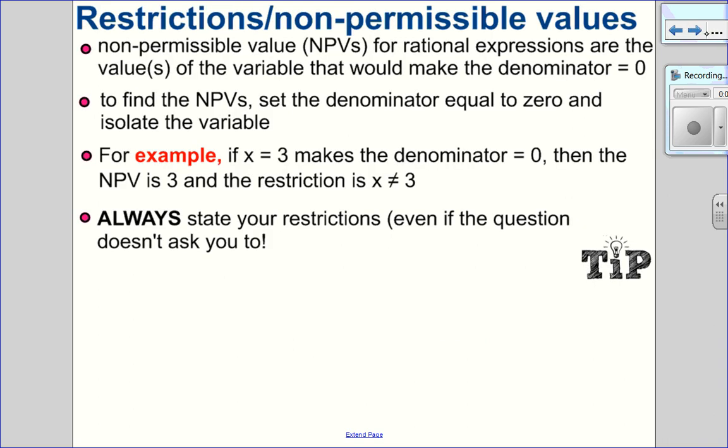Now that we know what a rational expression is, let's talk about restrictions and non-permissible values. Non-permissible values are the value or values of the variable that would make the denominator equal to 0. We're going to set the denominator equal to 0 and then isolate the variable to find them. For example, if x equals 3 makes the denominator 0, the non-permissible value is 3 and the restriction is x cannot equal 3.